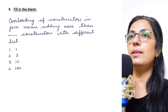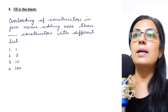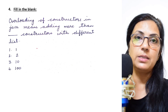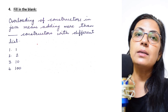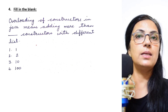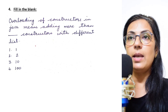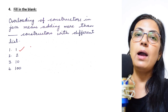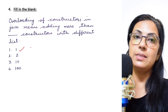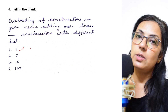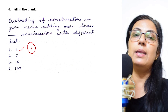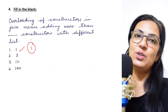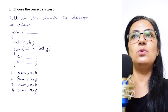Next question is fill in the blank: overloading of constructor in Java means adding more than dash constructors with different parameter lists. How many constructors do you need for it to be considered constructor overloading? It is more than one. Even if you have two constructors with the same name as the class name, that is constructor overloading. There is no fixed number — it should just be more than one. So option one is the correct answer.